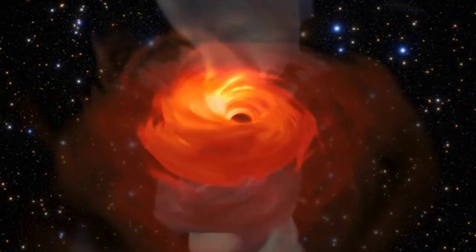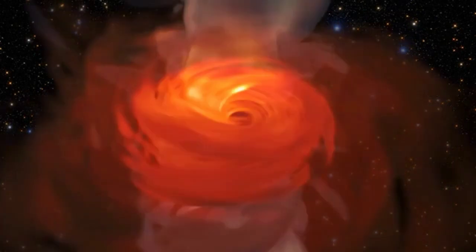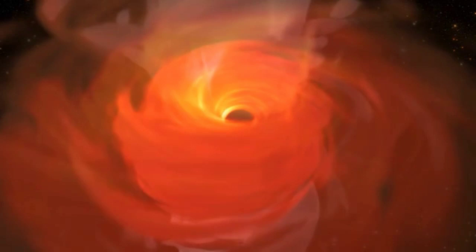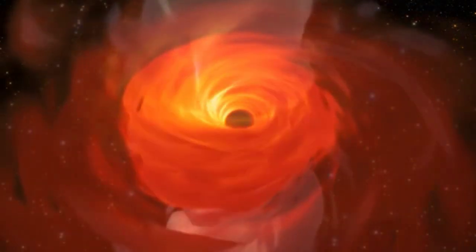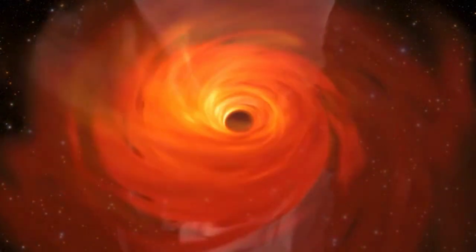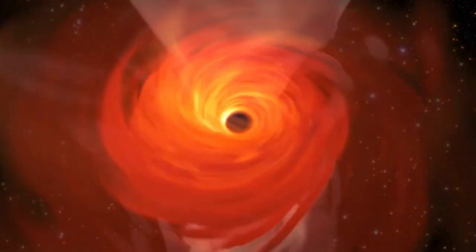It's true that once light passes the event horizon, also known as the point of no return, it can never escape. This is because the gravity is so strong that the escape velocity, the speed something would need to travel to escape, is greater than the speed of light. But there are several ways to spot a black hole.